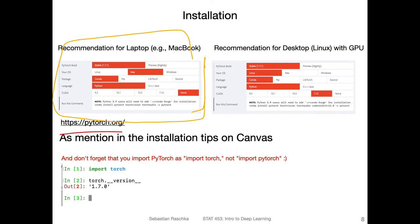On the PyTorch website, if you scroll down there's a menu where you select the version — I recommend the stable version — then your operating system. Personally I have a Mac, but you can use Windows or Linux as well. I use Conda for the installation and Python. I don't use CUDA on my laptop. Notice there is also torchvision and torchaudio, which are supporting libraries for computer vision and audio data. We will work with torchvision later in this course, so I recommend installing all of them in one go.